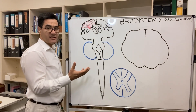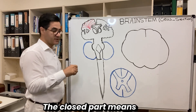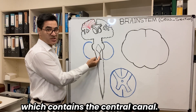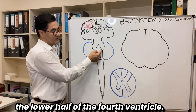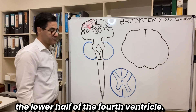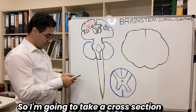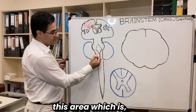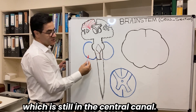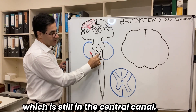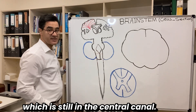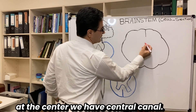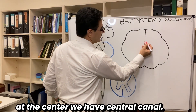The medulla oblongata has two parts: open part and closed part. The closed part is the caudal part which contains the central canal. The open part is the lower half of the fourth ventricle. I'm going to take a cross-section through the closed part — this area which is still in the central canal. So if I take a cross-section at this level, at the center we have the central canal.